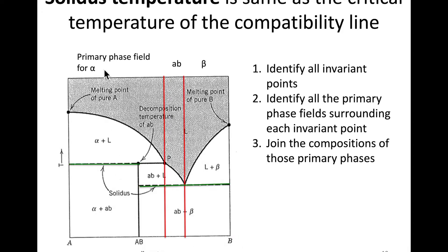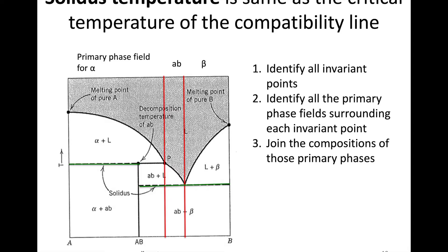For those two reactions in the binary, the compatibility line for the peritectic is here and for the eutectic is here. Below the green line we have no liquid — it's 100% solid — and above it we start to form liquid. The same applies on the other side: all solid below, then liquid begins to form. This is the liquidus temperature for that reaction.